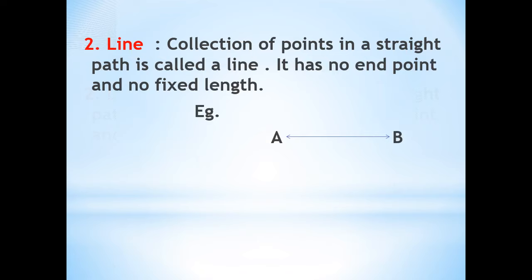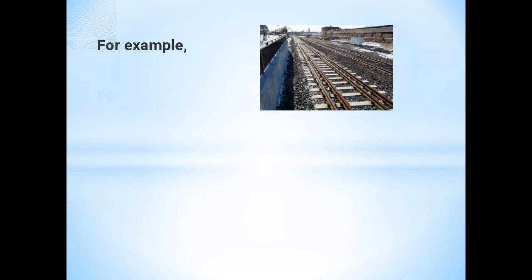Furthermore, we cannot measure the length of this line. A few examples of line are railway track, road, and orbit of the planets.